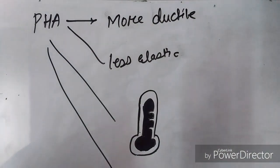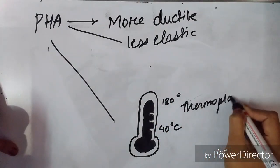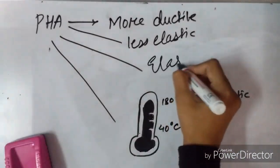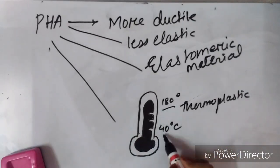Thermoplastic means they can be moldable at a particular temperature or within a temperature range. PHA has a melting point ranging from 40 to 180 degrees Celsius.